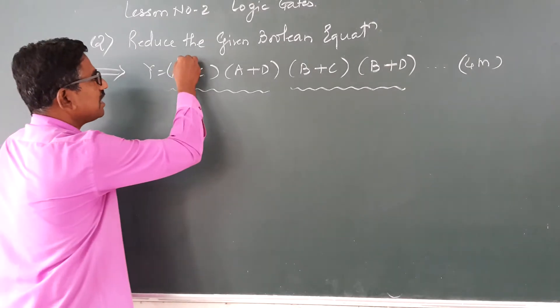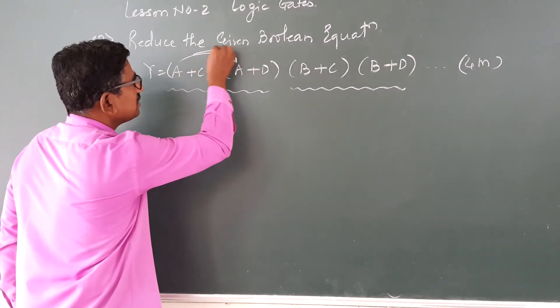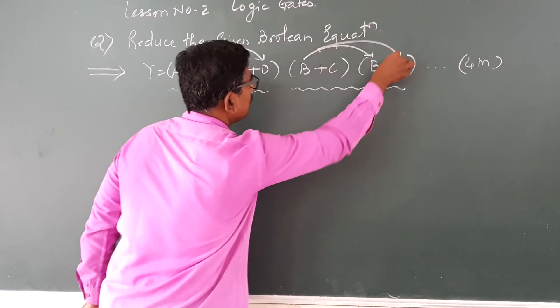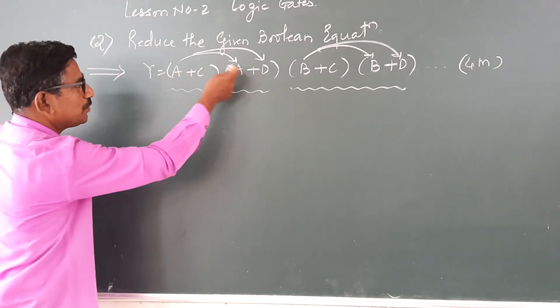So I will multiply this with the second bracket, and here also I will multiply this with the second bracket. Now, first we will multiply this with the second bracket.